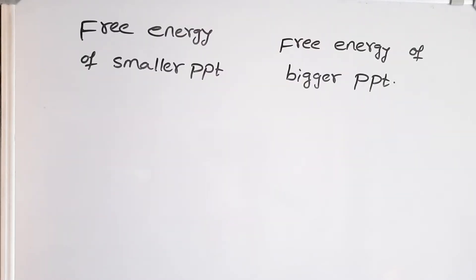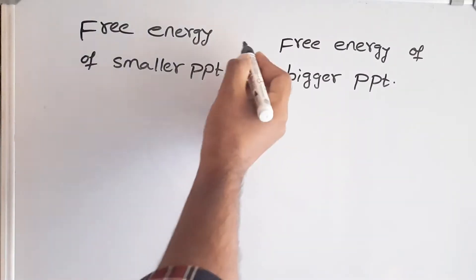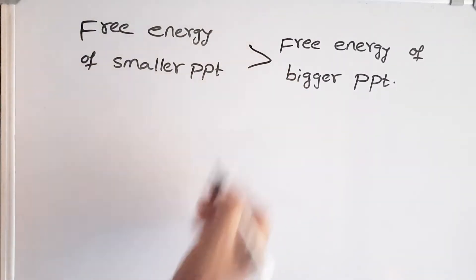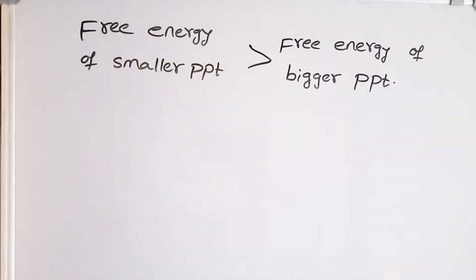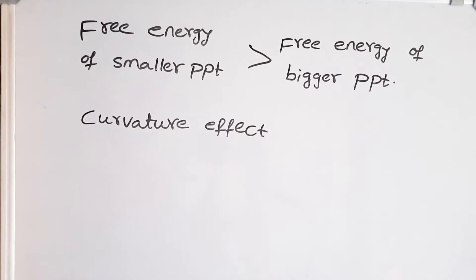The free energy of a smaller precipitate is greater than that of the bigger precipitate because of the curvature effect. The ratio of surface free energy to volume is greater for a smaller particle than for a bigger particle.